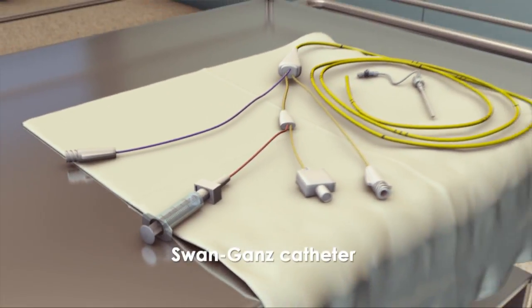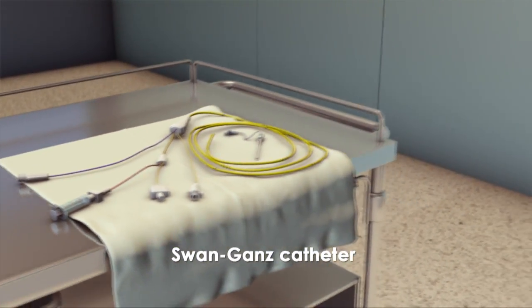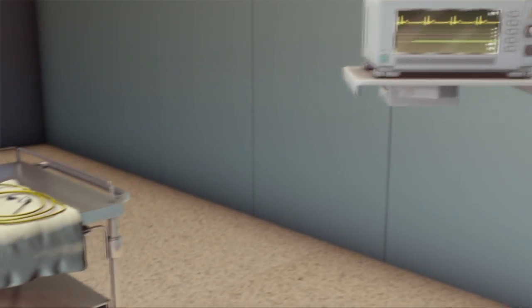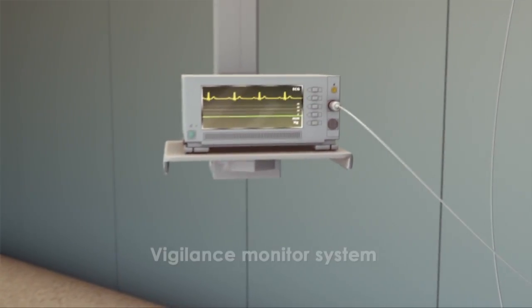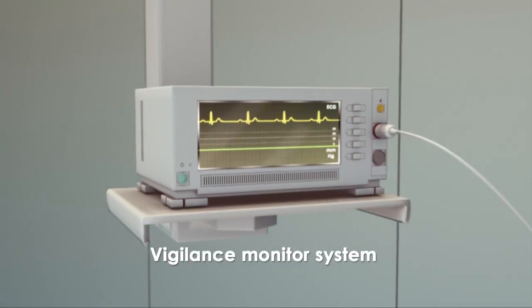The right heart catheter is the most important diagnostic tool for pulmonary hypertension and, given a thorough introduction, not complicated to use.